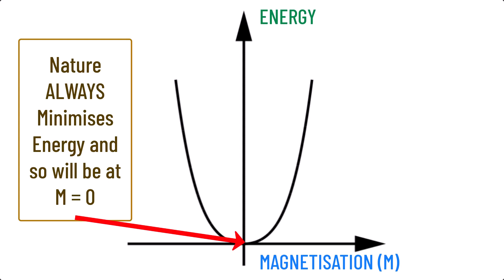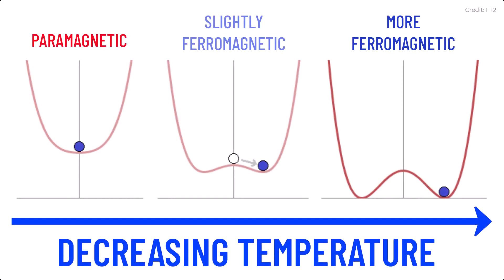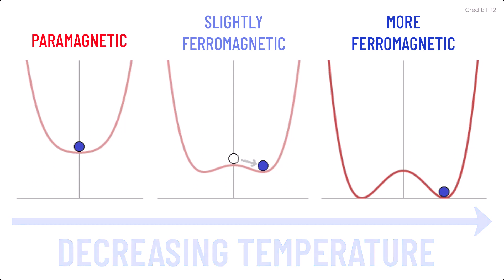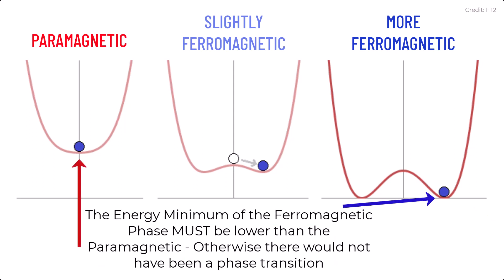Now as the material is cooled and transitions to the ferromagnetic state, you can see the graph will change and become something that looks like this. A sort of double well, with the double well minima being below that of the single well. Let me explain. We observe that below the Curie temperature, materials become ferromagnetic, and so nature must have found a lower energy point at a magnetization greater than zero. Hence the wells are not at zero magnetization, as they display ferromagnetism. And as we observe a phase change, we know they must be at a lower energy than the paramagnetic state.